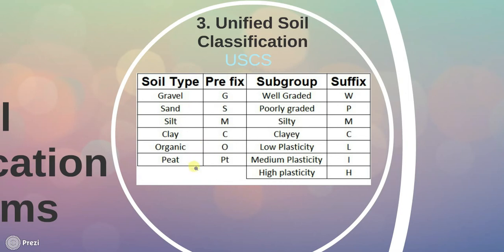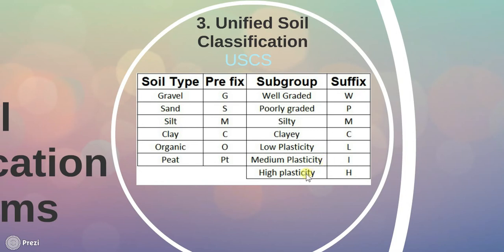This table is showing the salient features of USCS. All the soils are classified into groups having a prefix and suffix. The prefixes are: G for gravel, S for sand, M for silt, C for clay, O for organic soil, and PT for peat. For suffixes: W for well graded, P for poorly graded, M for silty, C for clay, L for low plasticity, I for medium plasticity, and H for high plasticity.